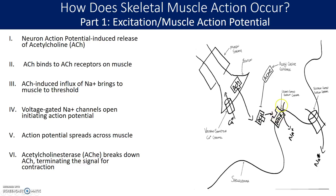When acetylcholine binds to that receptor, the acetylcholine receptor allows a small amount of sodium to come in. Every time an acetylcholine binds to a receptor, a little bit of sodium comes in. This is similar in concept to those EPSPs on the neuron, where it requires several acetylcholines binding to receptors to get up to threshold. Once enough sodium comes in, it changes the voltage enough to open up the voltage-gated sodium channels, causing an action potential that travels all across. Signaling is then terminated when acetylcholinesterase breaks down the acetylcholine, or when it diffuses out of the way.